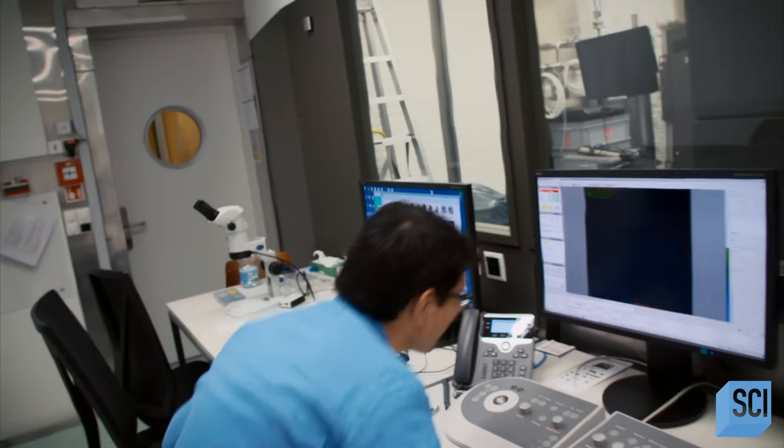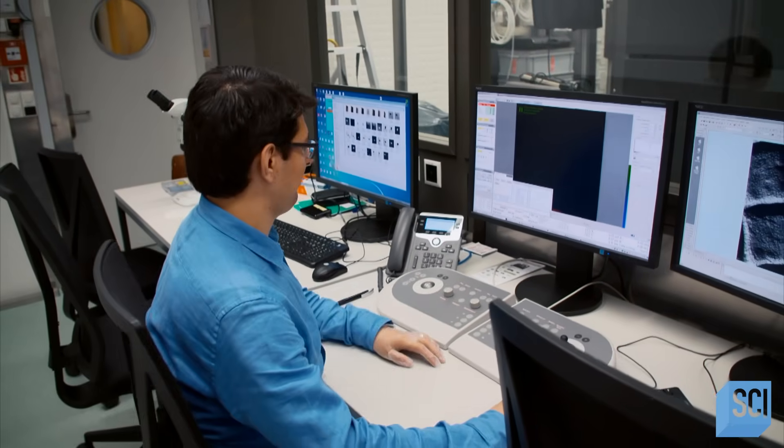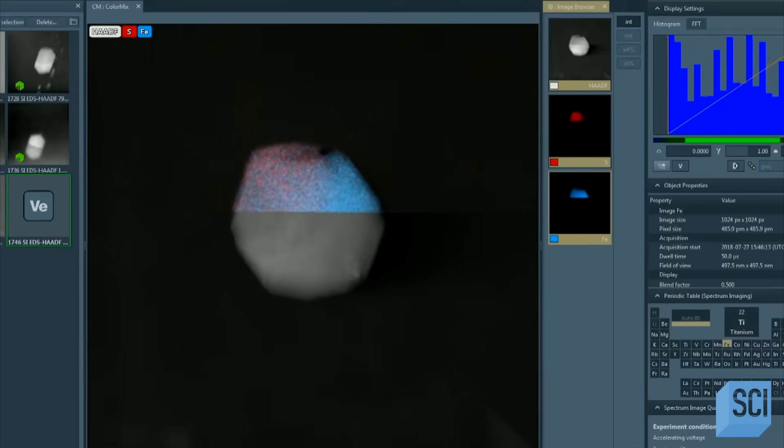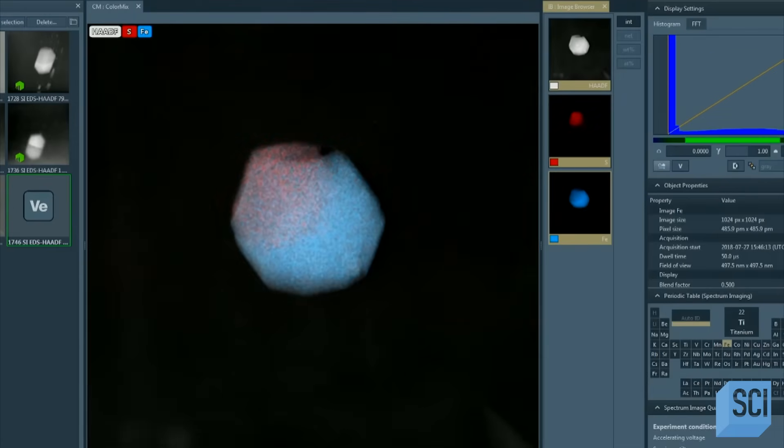Moments later, the results are in, and they reveal a surprise. The planet should be at least about Mercury to Mars size, to have such a pressure in its interior and form these inclusions and diamonds. The diamonds are unlikely to have come from something the size of a super-Earth.